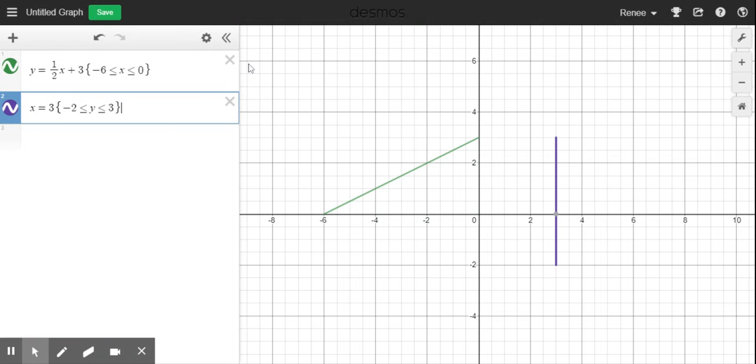You can do these restrictions with any type of graph. It doesn't have to be just a linear graph. You can do it with any of them and it will cut it off and only show you the values that are inside whatever the notation and whatever the restrictions that you've set are.